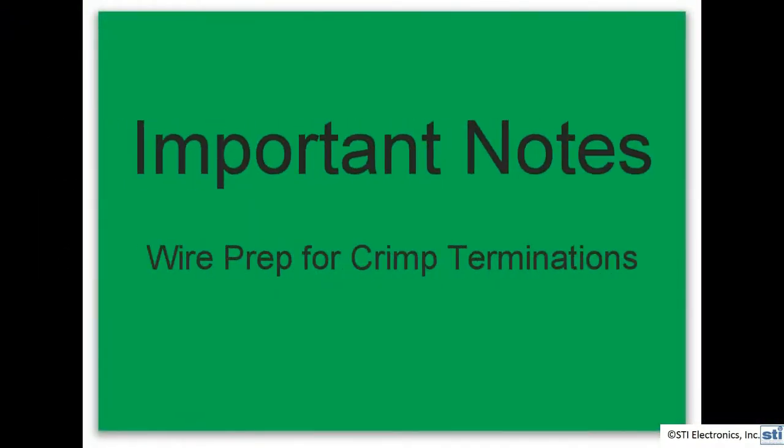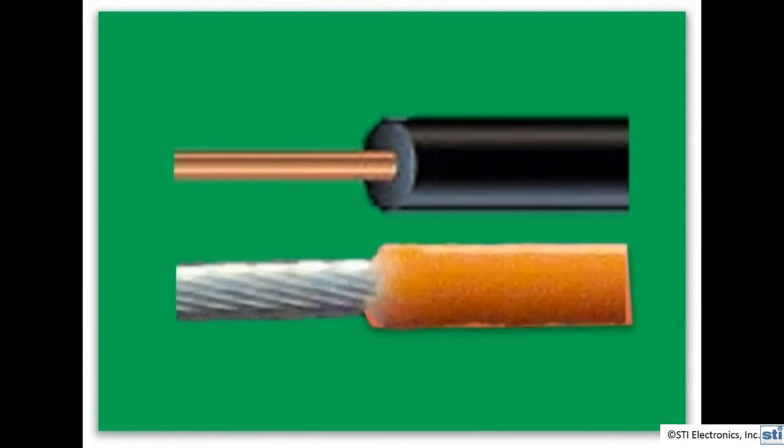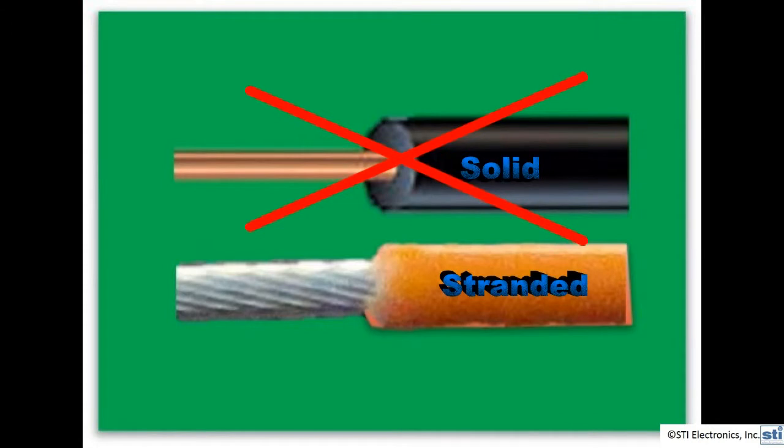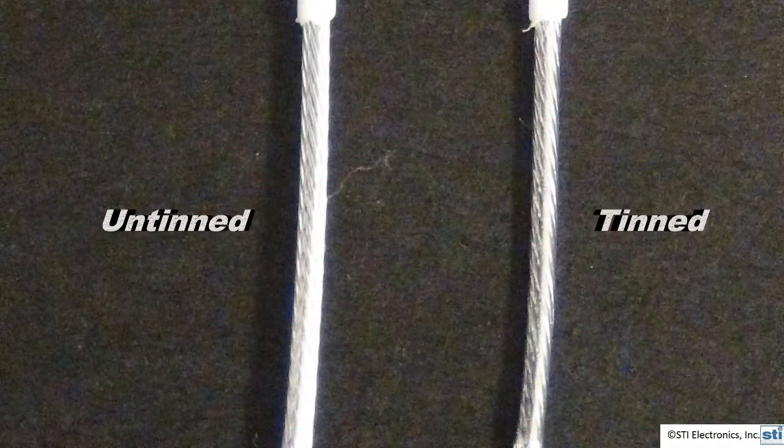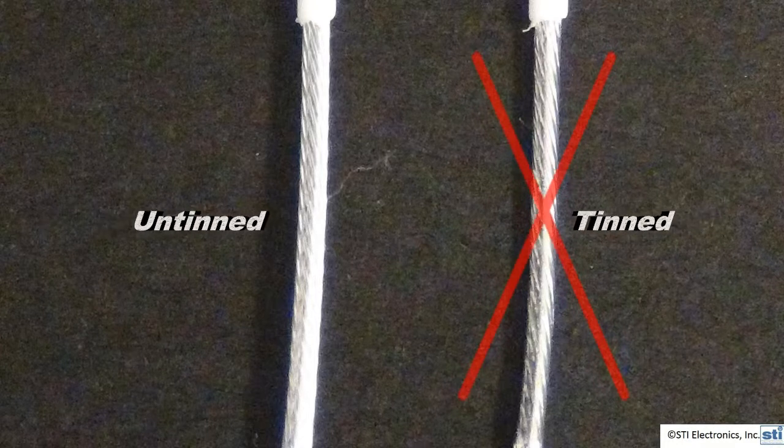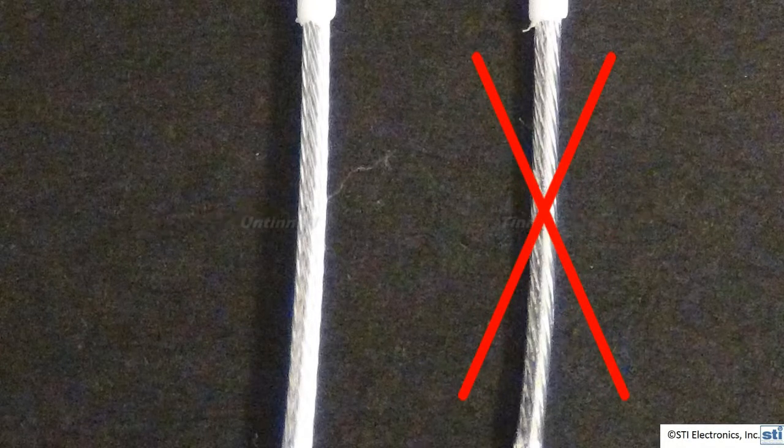we have a couple of important notes when you're preparing wire for crimp terminations. Number one, it's important to remember that we only crimp stranded wire. We can never crimp solid wire unless it is specifically called for in our work instructions. Number two, when we're doing crimp terminations, the wire shall not be tinned.